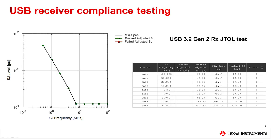As you may recall, we've talked about compliance testing of the USB host, hubs, and devices not only consisting of transmitter testing, but receiver testing as well. What is shown here are examples of results of a USB 3.2 Gen 2 receiver jitter tolerance test. In this case, there are nine points that are tested at different jitter frequencies and amplitudes. At each test point, a stress signal with calibrated jitter and channel loss is generated.